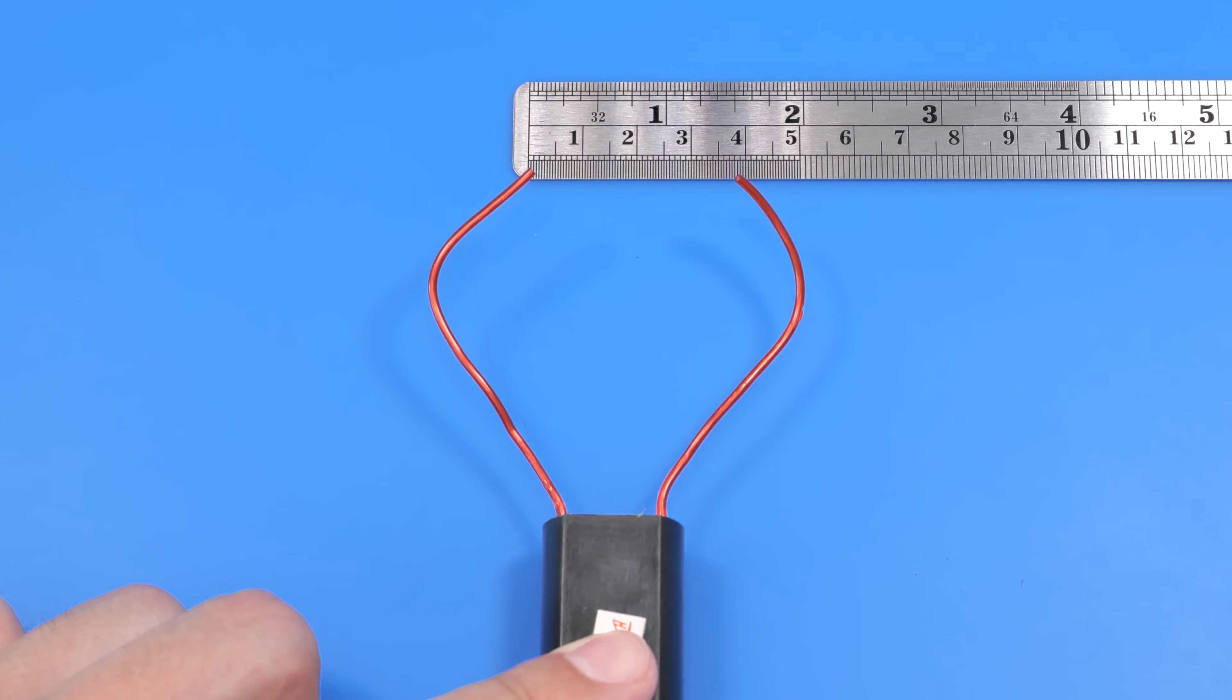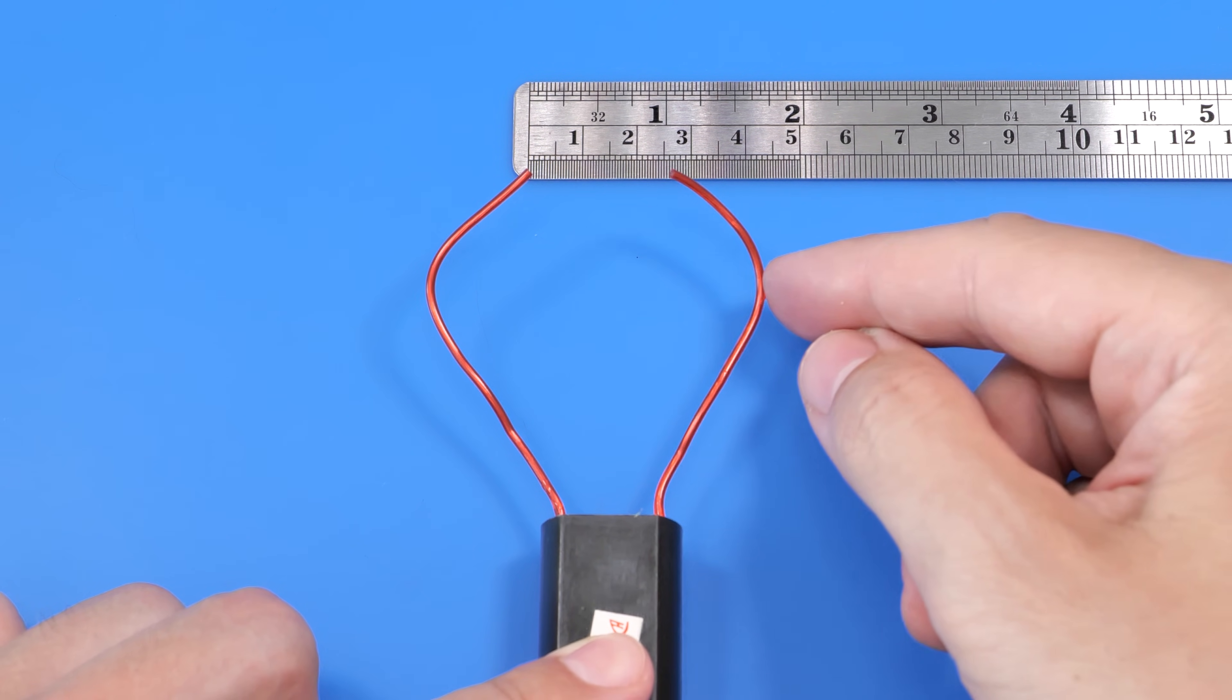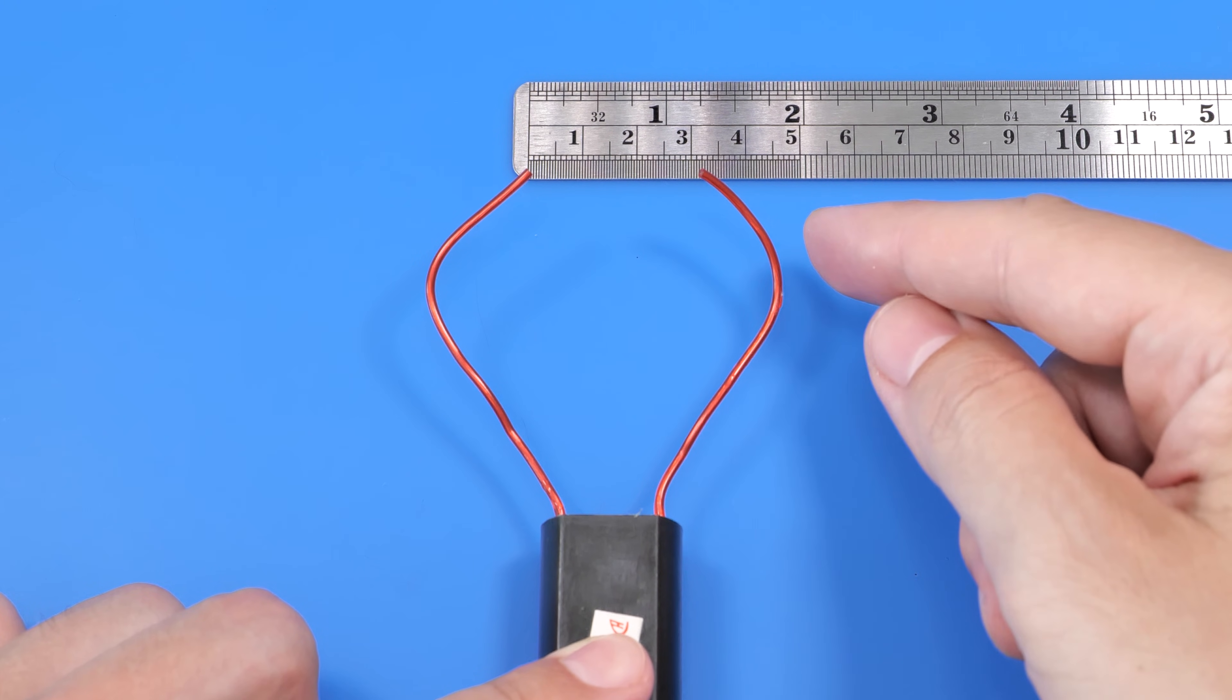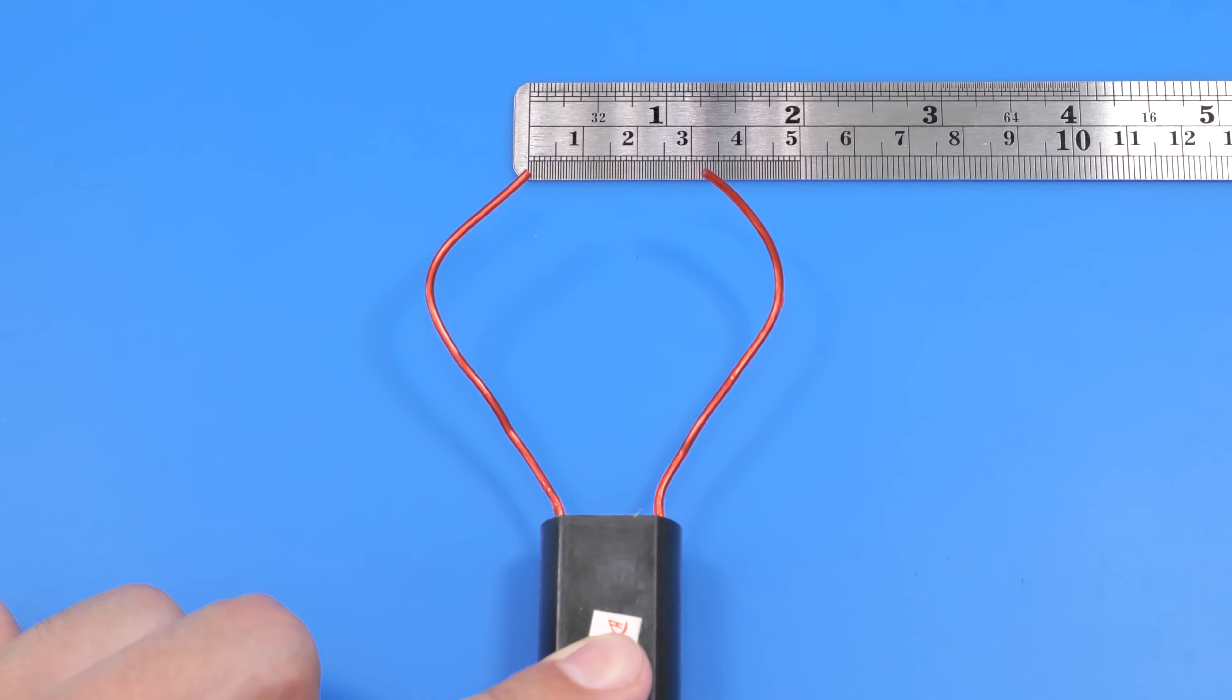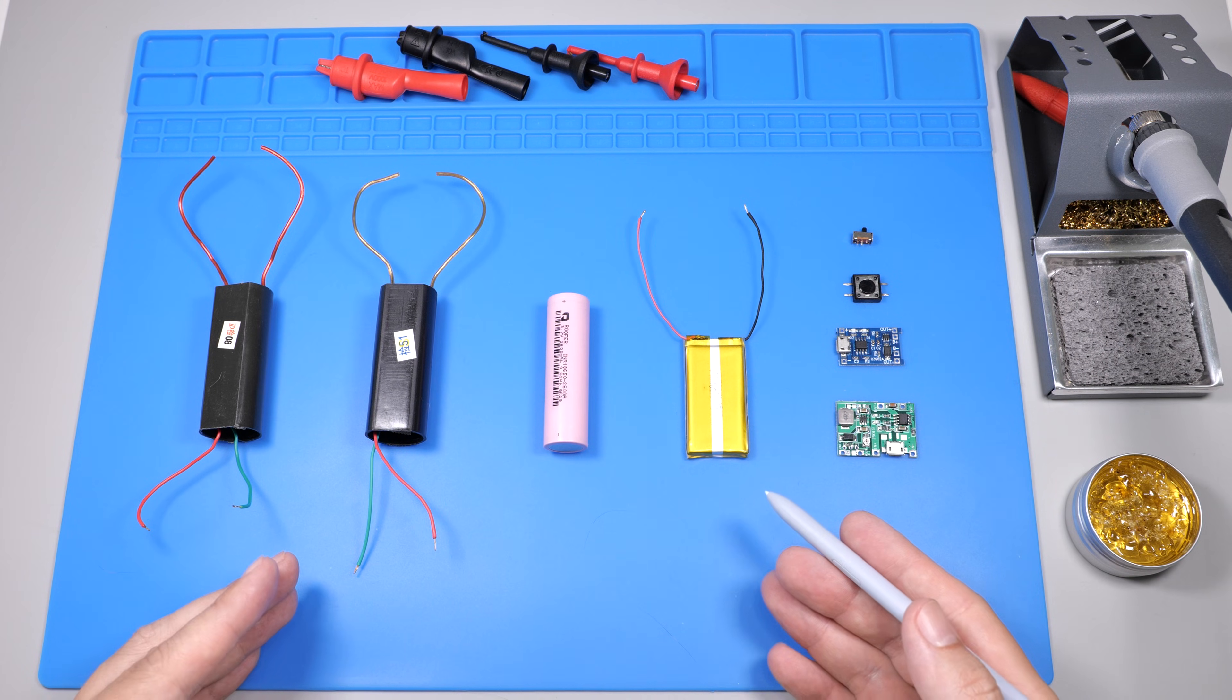As you can see, the maximum arc length is around 40mm. Since roughly 25,000V can create a 10mm spark, that puts the output at around 100,000V. Definitely enough for a serious application. Now let's talk about putting everything together into a complete device.